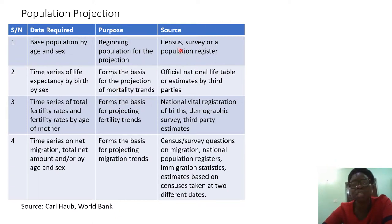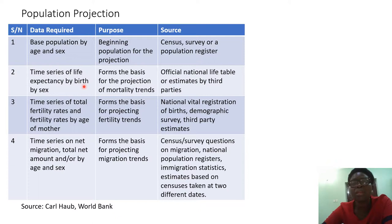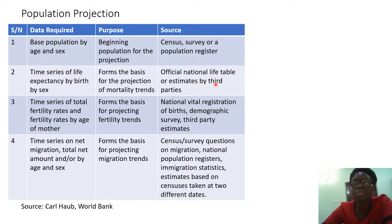You also need a time series of life expectancy by age and by sex, because life expectancy will form the basis for the projection of mortality trends. You can find this from national life tables or estimates by third parties.